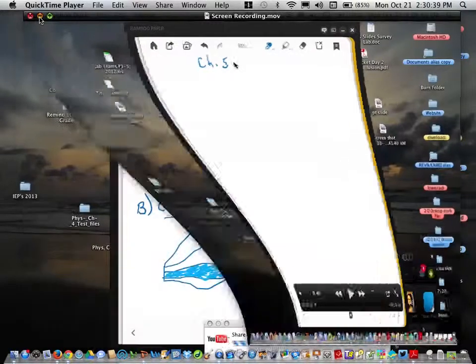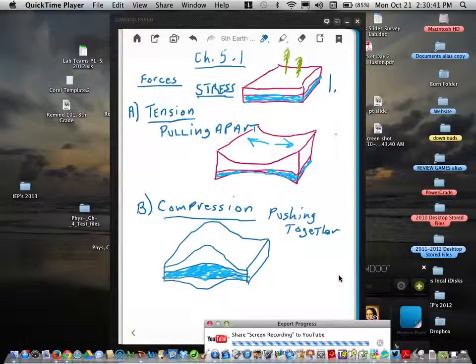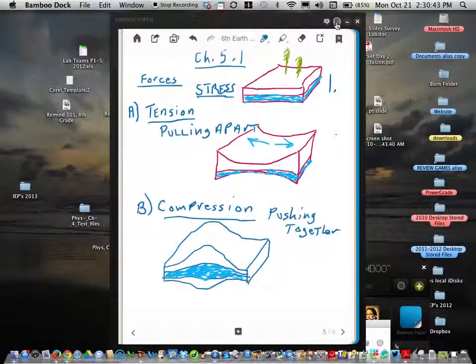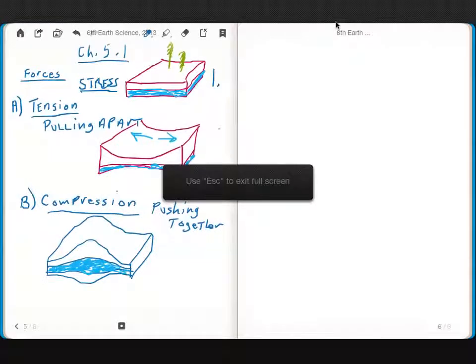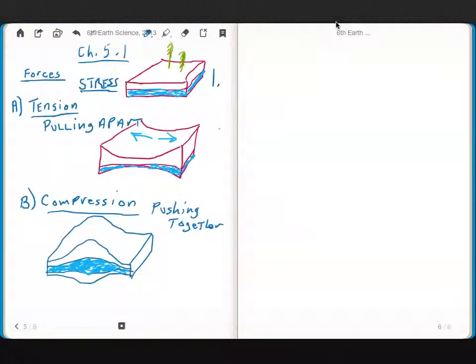And that third type of force, so we have tension pulling apart, creating valleys, and compression pushing together, forming mountains.